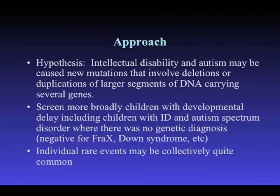The basic underlying hypothesis in our work was that intellectual disability and autism spectrum disorder may be caused by new mutations that are very young — either not present in the parents, or having emerged in maybe the last generation or two. Big gains or losses of DNA that occurred fairly recently, found in children with developmental delay and autism but not in normal individuals. It's a fairly simple model.